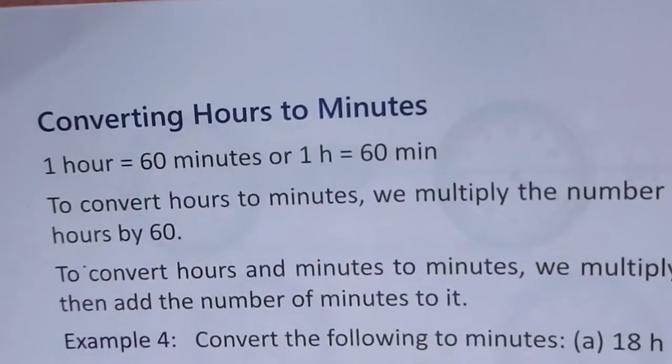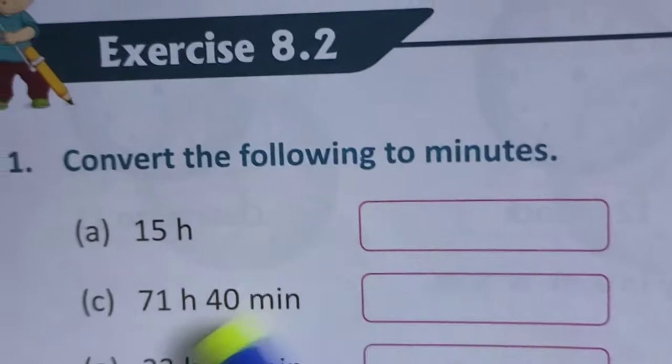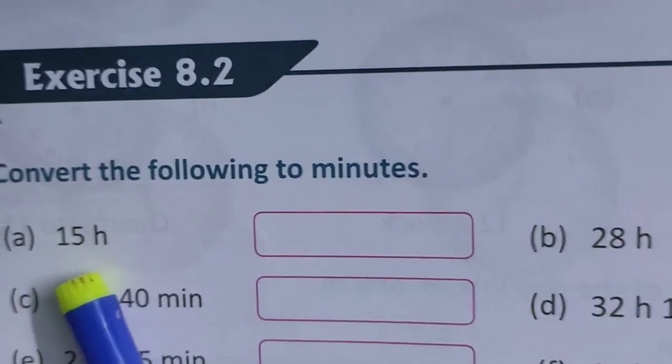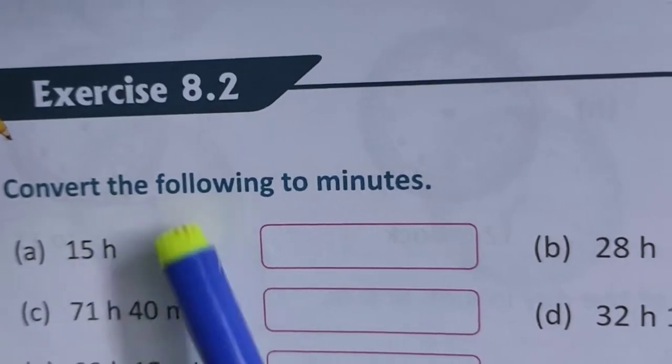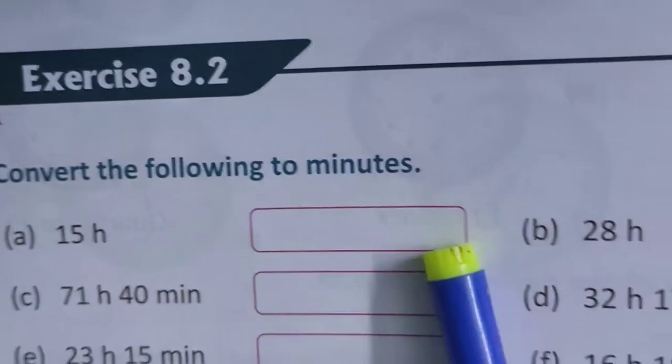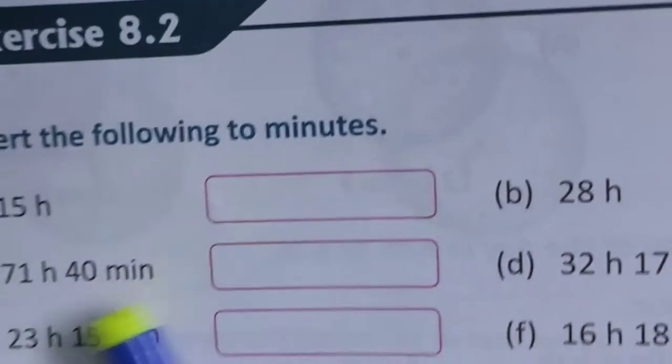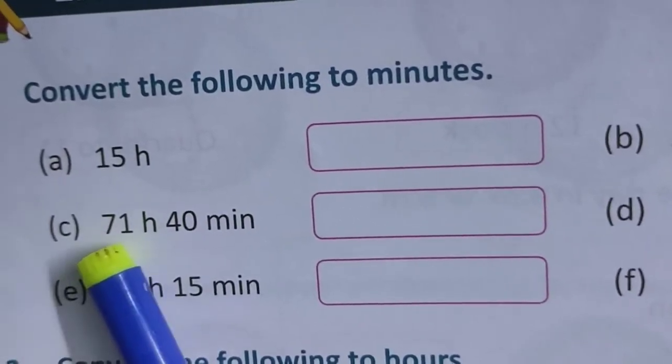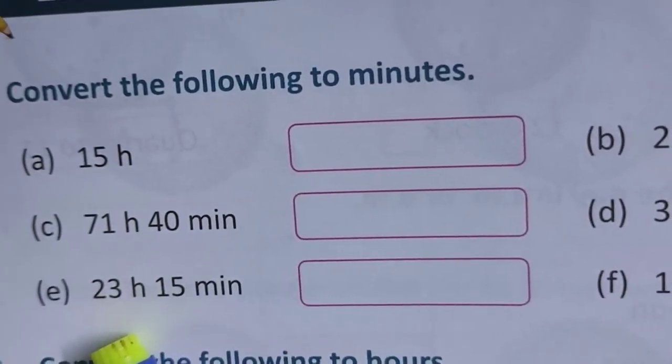Now, exercise 8.2. Convert the following to minutes. You know, 1 hour is equal to 60 minutes. So, you just multiply 15 hours into 60. Write the minutes here. 71 hours 40 minutes. You multiply 71 by 60, then add 40 minutes with it.